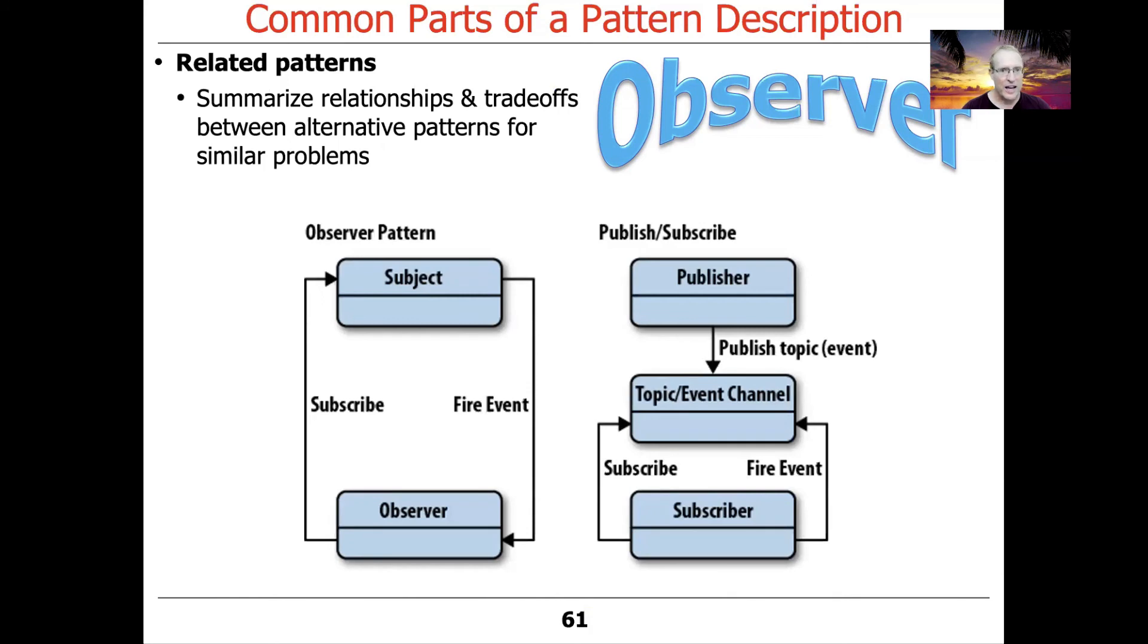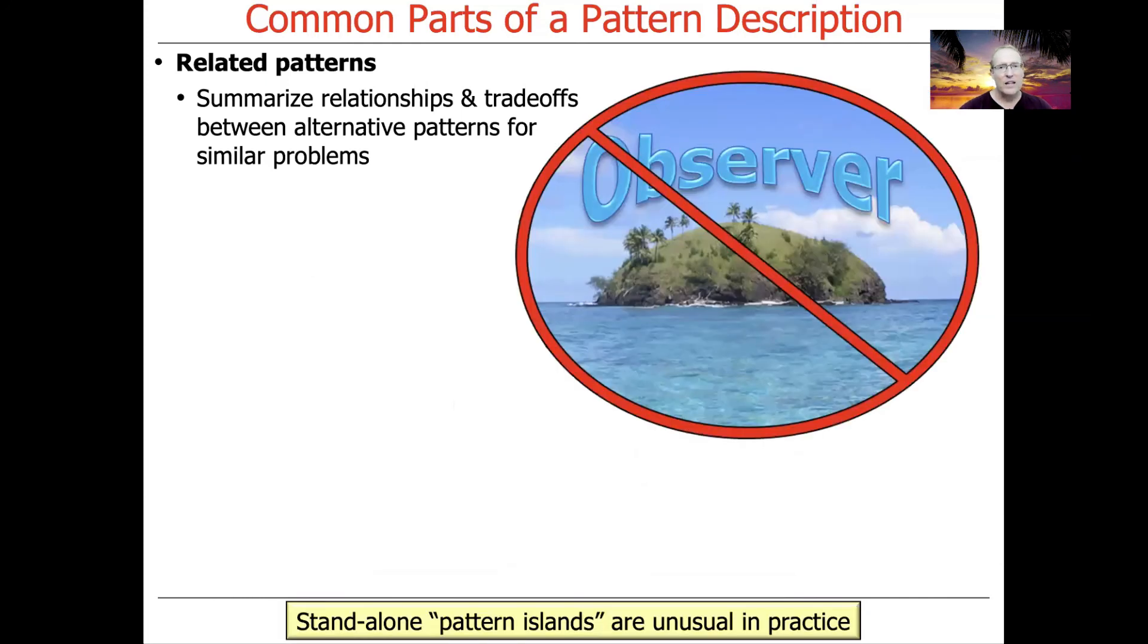The pattern descriptions also will contain related patterns because patterns very rarely exist in isolation. A classic example as shown here is the relationship between the observer pattern from the Gang of Four book and the publisher subscriber pattern from the POSA 1 book. Those patterns are very clearly related to each other. You can think of the observer pattern as a little bit of a stripped down version of publisher subscriber. Publisher subscriber has this other role called an event channel that serves as an intermediary between publishers and subscribers and can do things like filtering and correlation. Observer is also related to the model view controller pattern. Round and round you go, seeing these relationships, finding the ways that patterns connect, because patterns love to work together. They don't like to be isolated. Standalone pattern islands are very unusual in practice. You very rarely have observer by itself with nothing else, no other patterns involved in the way in which the software is designed.